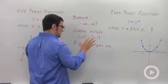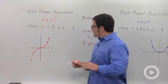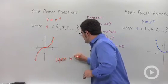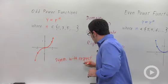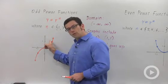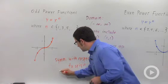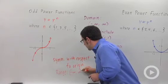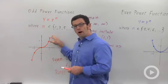Properties specific to the odd power functions: they are symmetric with respect to the origin, meaning you can rotate the graph 180 degrees and get the same picture. Also, the range is all real numbers — these functions go up to infinity and down to negative infinity, so you hit every possible y value.